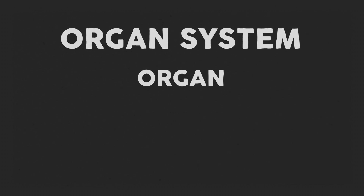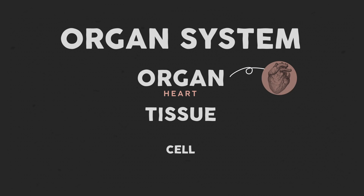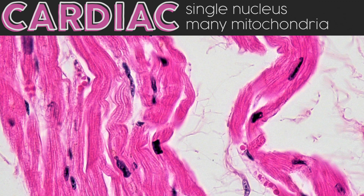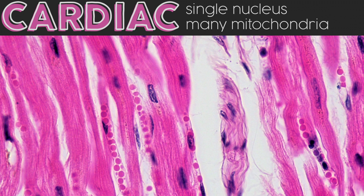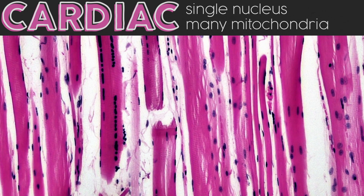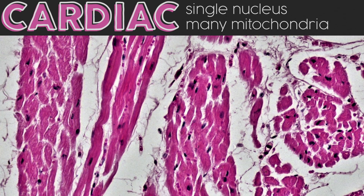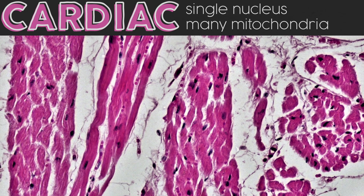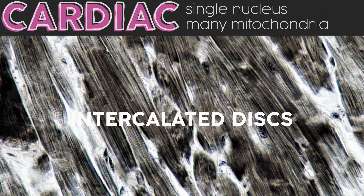Quick terminology note: when we say myocardium we're talking about the tissue level, but cardiomyocytes are the cells — literally heart muscle cells. These cells have unique characteristics compared to skeletal muscle: they look like rectangles instead of cylinders, each usually has a single nucleus per cell, and a large number of mitochondria. You'll also see some capillaries scattered around. Since the heart's chamber muscle cells need to contract in unison, there must be essentially zero lag in electrical impulses cell to cell. Junctions called intercalated discs allow cardiac muscle to send transmission signals super quickly between cells.